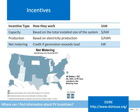Incentives can help lower the total cost of a PV system. Common incentives include capacity incentives, which are based on the total installed size of the PV system; production incentives, which are based on how much electricity the system is generating; and net metering incentives, which give you bill credit even if the PV production exceeds your load at a particular time. This map shows the 38 US states and territories that have some form of net metering incentives. The Database of State Incentives for Renewables and Efficiency, or DSIRE, is a great resource for staying up to date with incentives in your area.